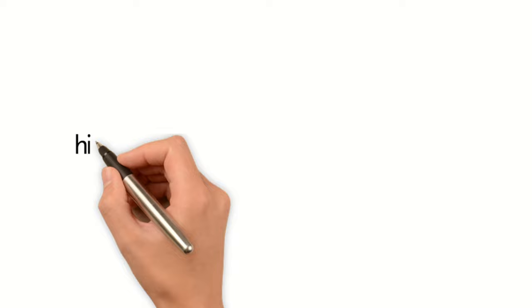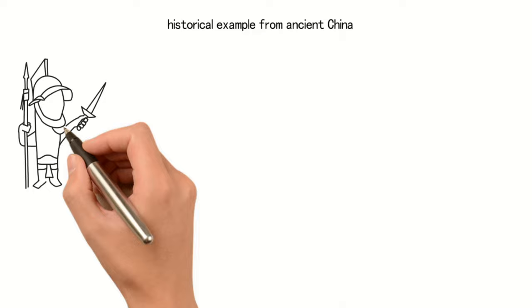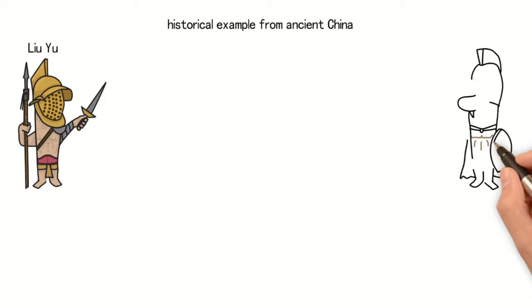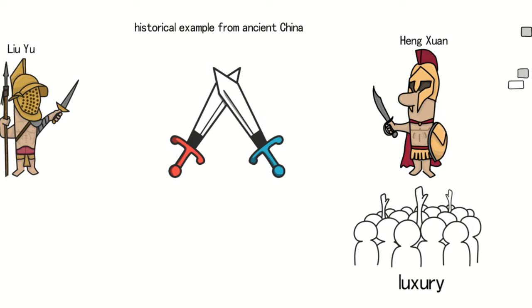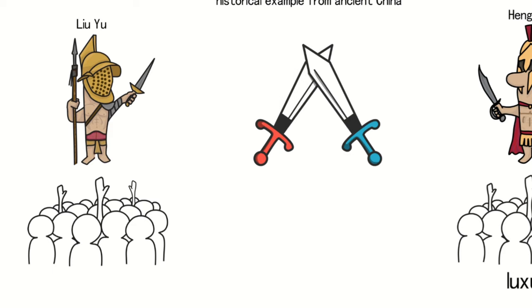In a historical example from ancient China, Liu Bang's descendant Liu Yu was a farmer who later became a prominent general in the Eastern Jin dynasty. During that time, there was a nobleman named Heng Xian, who rebelled and declared himself emperor, leading to a war with Liu Yu. Heng Xian's generals were all nobles who indulged in luxury, while Liu Yu, a farmer by origin, trained his troops extensively, and they were capable of fighting.